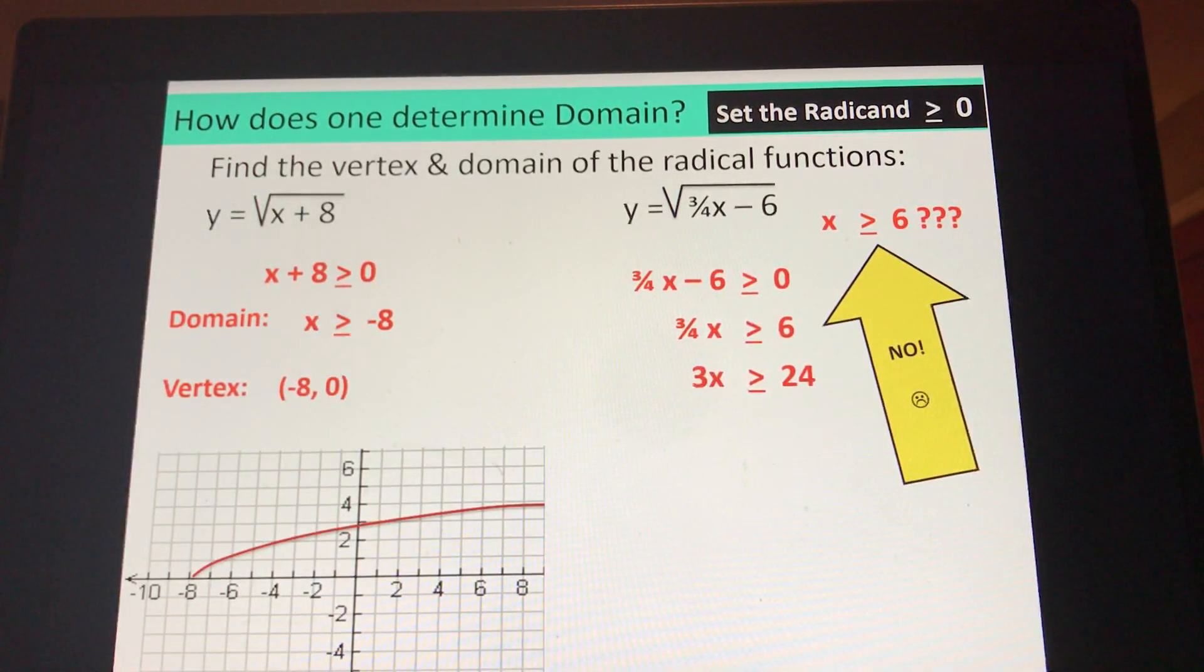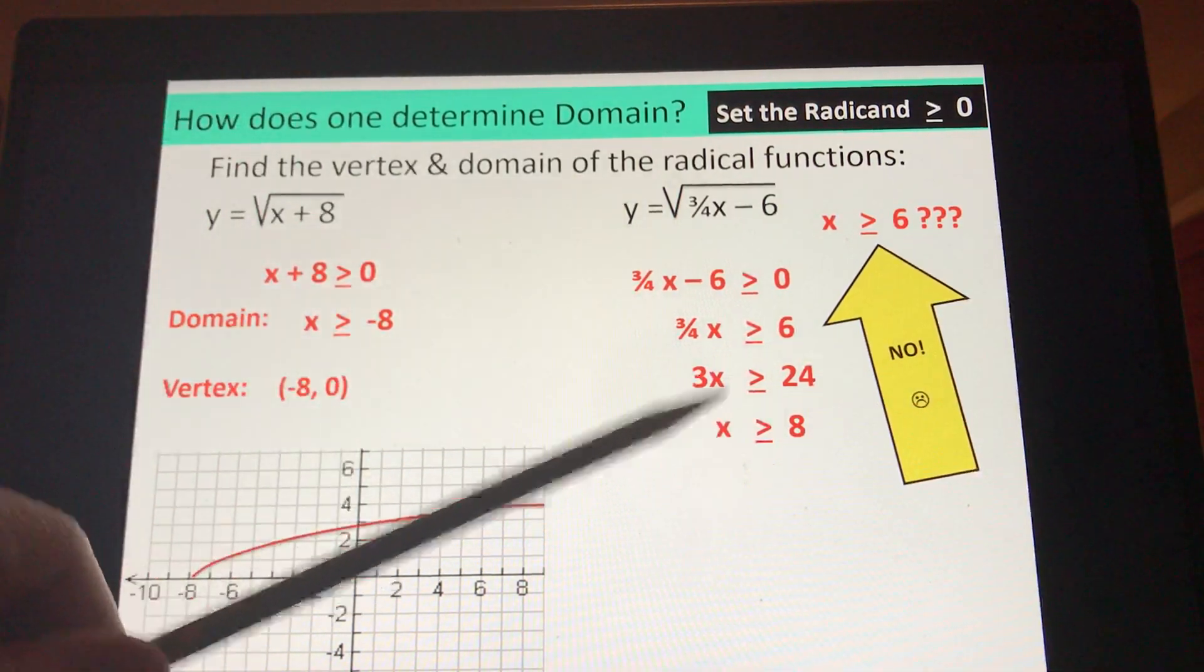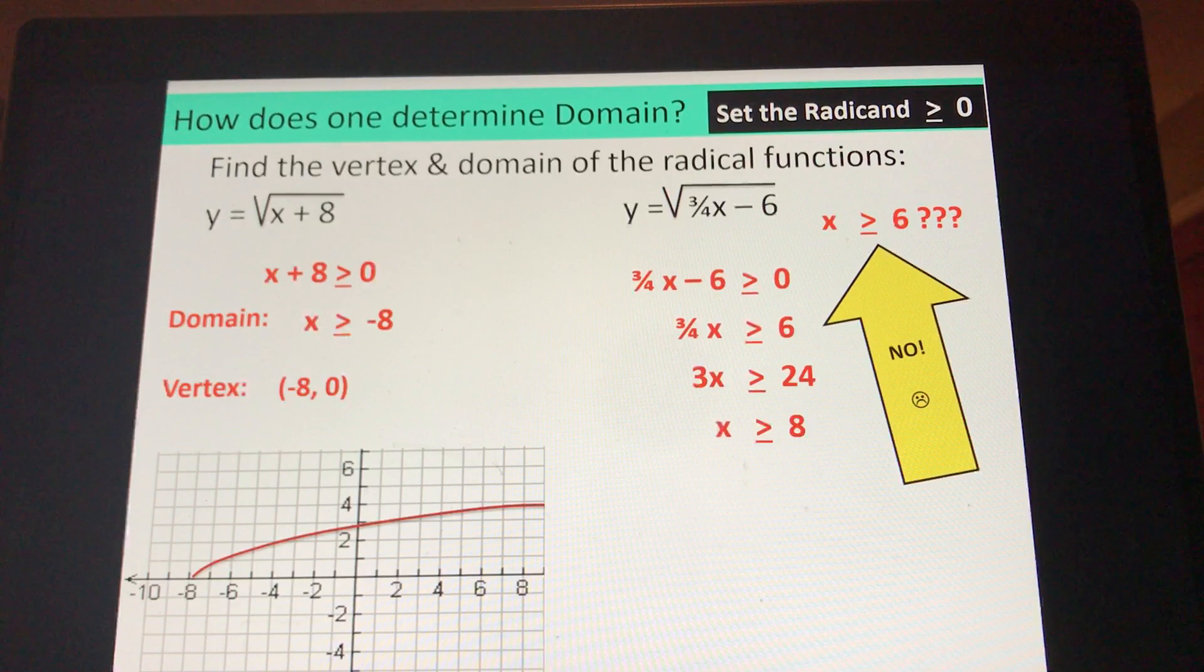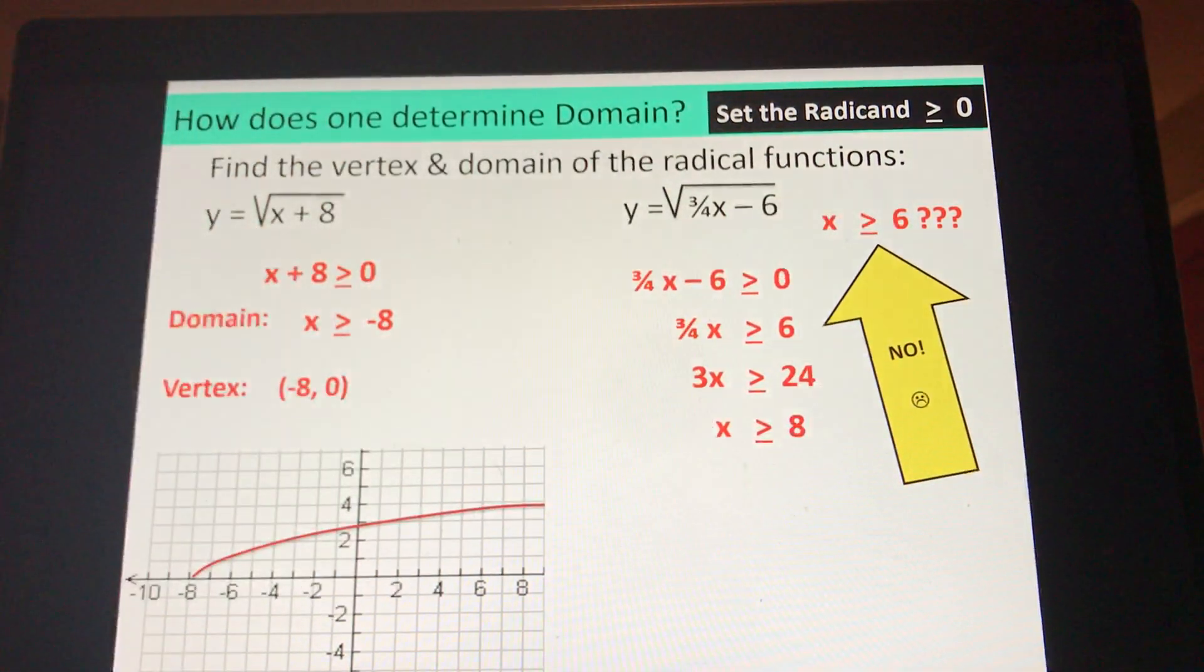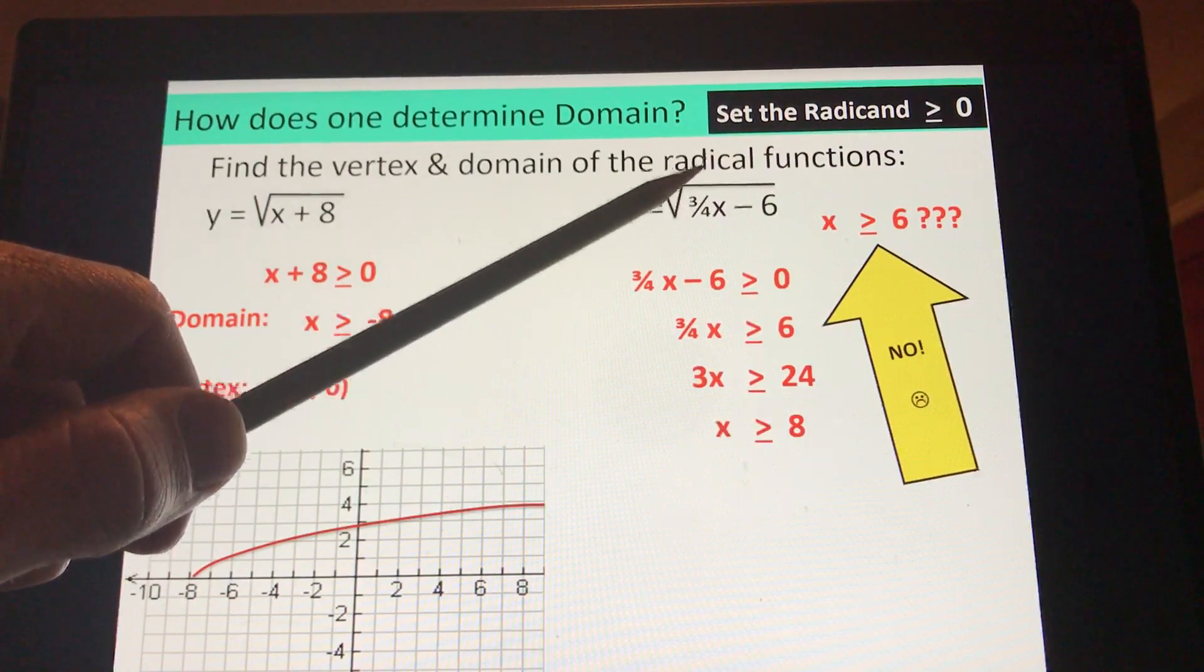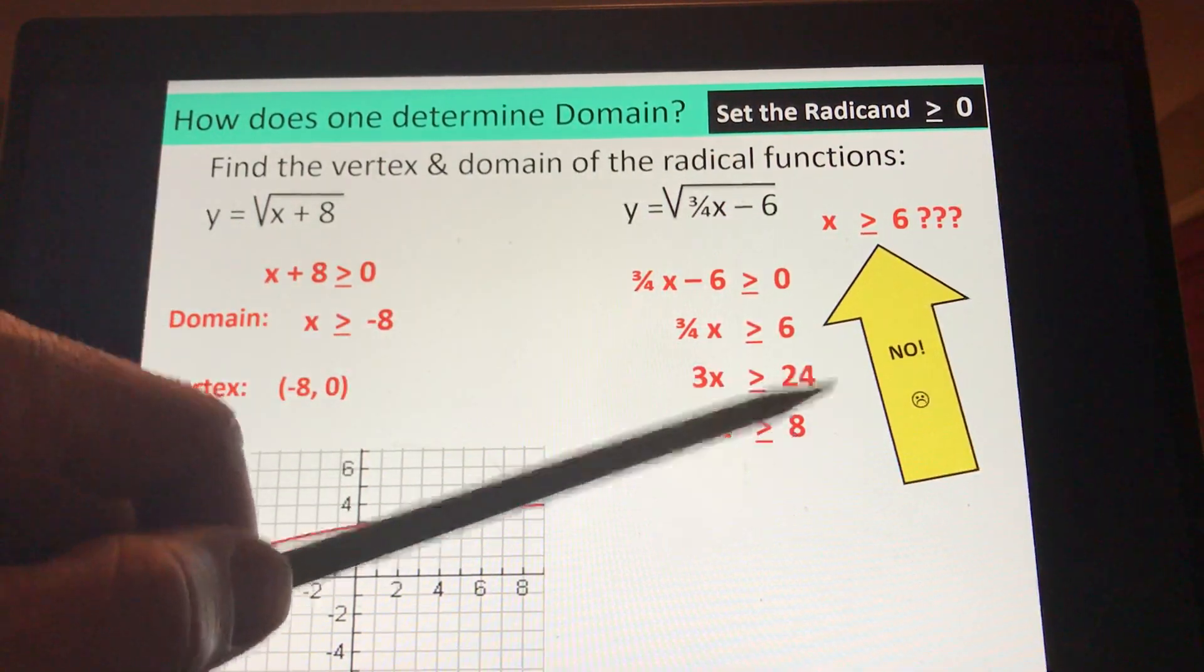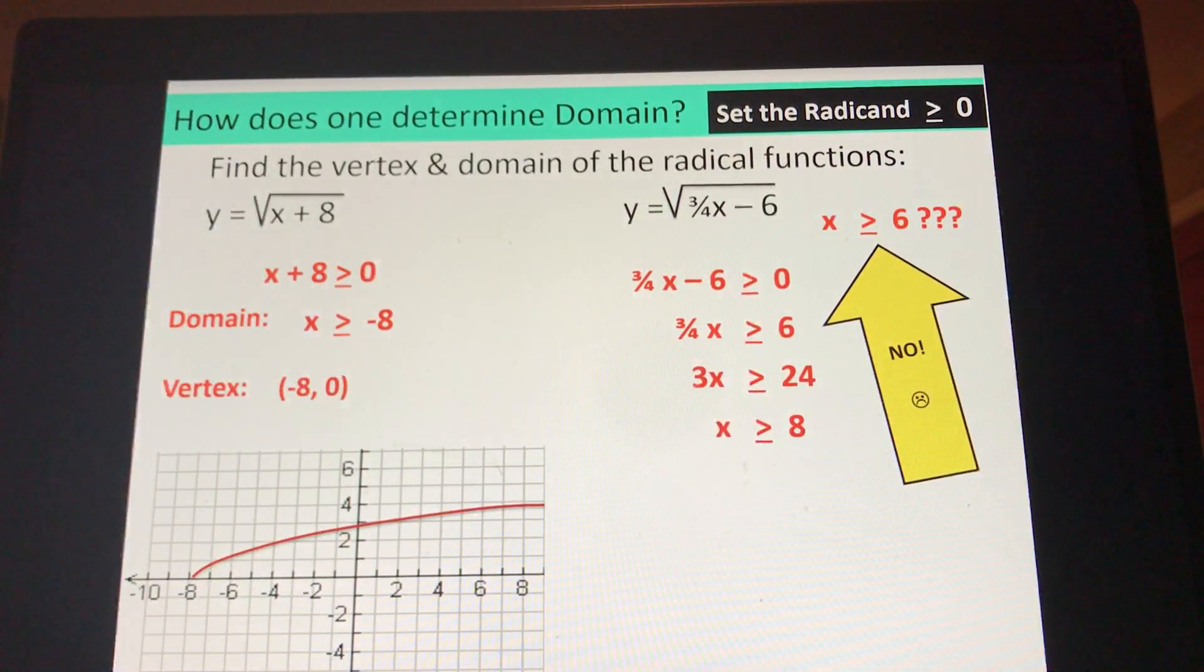And you probably divide by 3. 24 divided by 3 goes in evenly eight times. So that is the domain. I know, I know, it's funky because you thought it was any positive six over here. It ends up being positive eight because three-fourths of eight is six, and six minus six is zero.